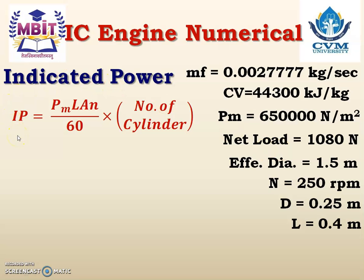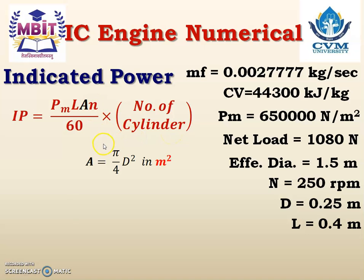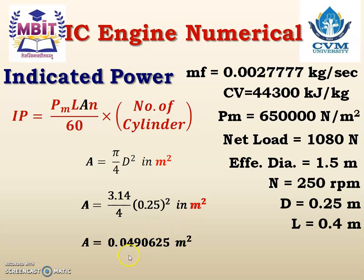Now, indicated power. The equation for IP is: PM × L × A × n / 60, multiplied by number of cylinders. PM is given, L (stroke length) is given, number of cylinders is given as 1. Area A has not been given, so we have to calculate it. Capital A = π/4 × D² = 3.14/4 × (0.25)² = 0.0490625 m².